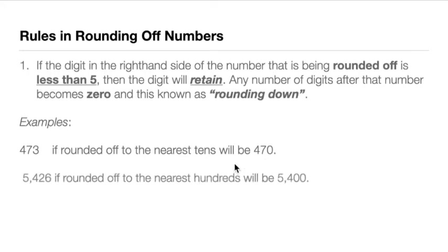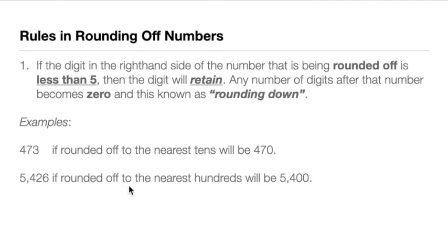Another example: we have 5,426. If this number is rounded off to the nearest hundreds, we look at the digit 4 in the hundreds place. The number to the right of 4 is 2, and 2 is less than 5, so we retain the 4. The answer is 5,400. We call this rounding down. Hopefully that is clear.